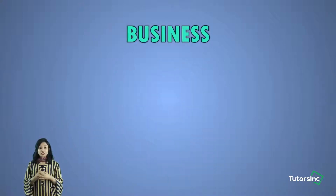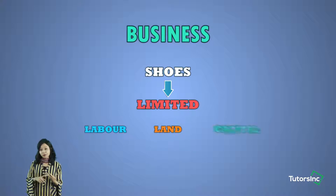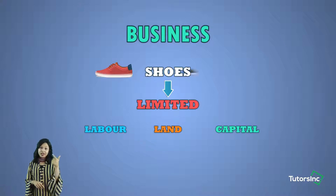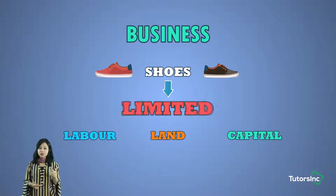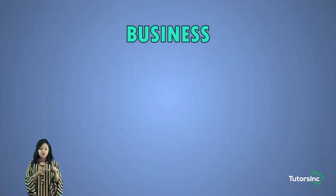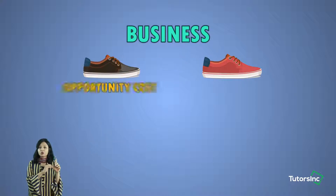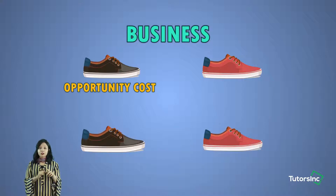Now, I'm going to explain the concept of opportunity cost through the lens of a business. Consider a business which manufactures shoes. The business has limited labour, land, and capital, and wants to manufacture both red shoes and black shoes. Because these resources are limited, the business would have to choose either the black shoe or the red shoe. If the business chooses the red shoe, the black shoe becomes the opportunity cost. If the business chooses the black shoe, the red shoe becomes the opportunity cost.